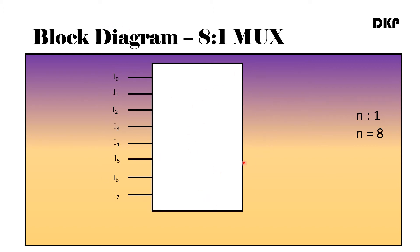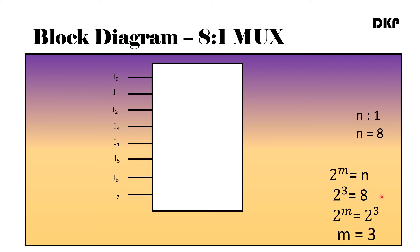Now, how many select lines are there in this 8-to-1 MUX? For that, you have to use the formula 2 to the power of m equals n. The value of n here is 8. So 8 can be written as 2 to the power of 3, that is 2×2×2 = 8. Therefore m equals 3, so there are 3 select lines: S0, S1, and S2. It is having 1 output Y. Therefore the name 8-to-1 MUX — 8 inputs and 1 output.